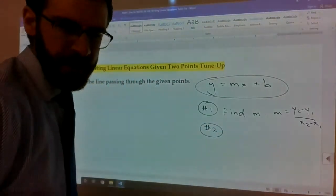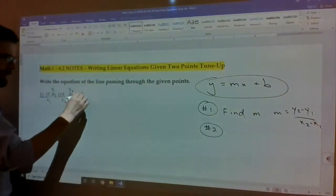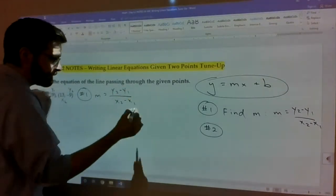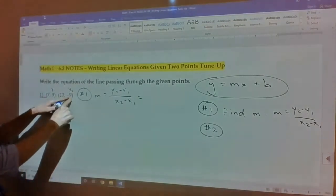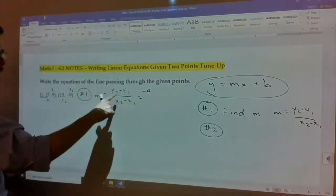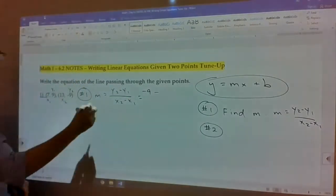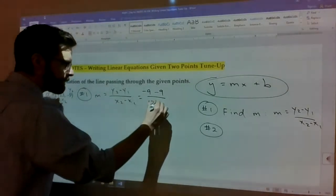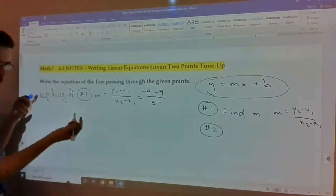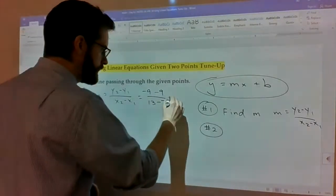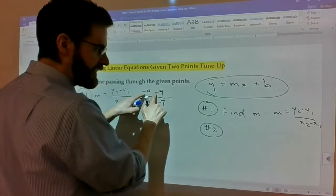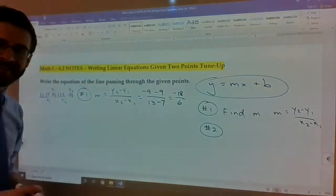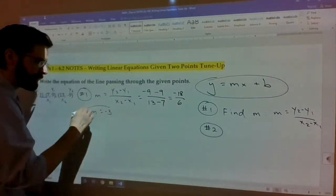It's basically how do the y's change, which is sort of like the rise, how do the x's change, which is sort of like the run. So I can name these points x1 for the 7, y1 for the 9, and x2 is the 13, y2 is the negative 9. That's step one. Let me do it step by step with this first one.